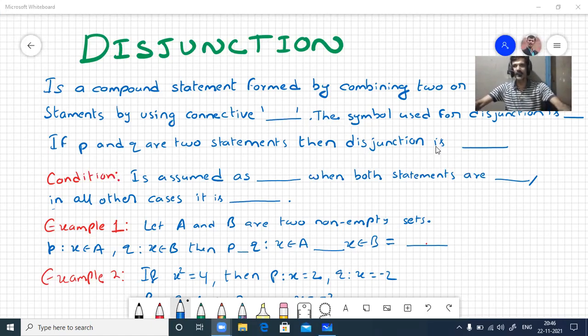Namaste, welcome to all. Today we'll discuss disjunction. It is a compound statement formed by combining two or more simple statements by using a connective OR. I'll write that, OR, and the symbol we use for disjunction is this.